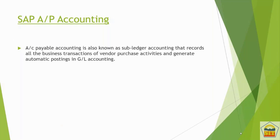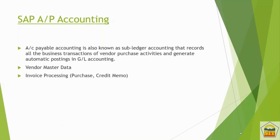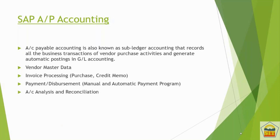All transactions with the supplier — purchases, purchase returns, and payments — are recorded in Accounts Payable Accounting. We create the supplier account (called vendor master data), then create purchase invoices and purchase return invoices, and then process payment for those invoices, either manually or automatically.